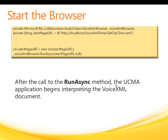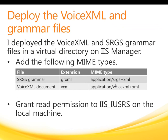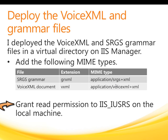The main prompt in the VoiceXML document asks the user to say the name of a city. When the user responds with a city whose name is in the SRGS grammar, the VoiceXML document speaks a prompt that tells the time in that city. For testing purposes, I used Internet Information Services Manager to deploy my VoiceXML document and SRGS grammar file and placed these files in a virtual directory. There are a couple of things you need to do before you can run the UCMA application: first, add MIME types for the two files — the MIME type for the grammar file is application/srgs+xml and the MIME type for the VoiceXML document is application/voicexml+xml; second, grant read permissions at least for the IIS_IUSRS group on the local machine.